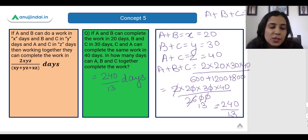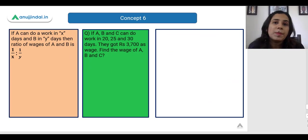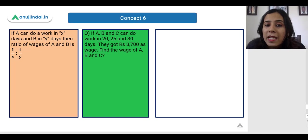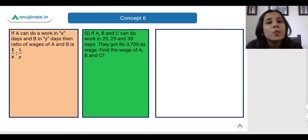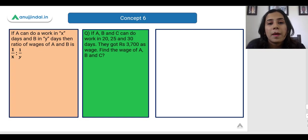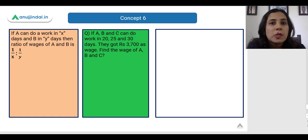Now let us see the next shortcut. Until now we had seen shortcuts related to time taken. Now we will see something related to wages. If A can do a work in X days and B can do it in Y days, then the ratio of their wages is 1/X : 1/Y. This is straightforward and I will explain it with an example.